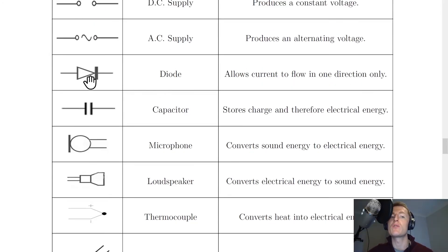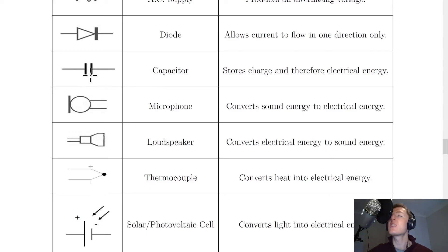Next, we have a diode, which is this sort of triangle shape with a big thick line at the end. And this allows current to flow in one direction only. Next, we have a capacitor, which you'll see is two thicker lines separated by air. And this stores charge and therefore electrical energy.